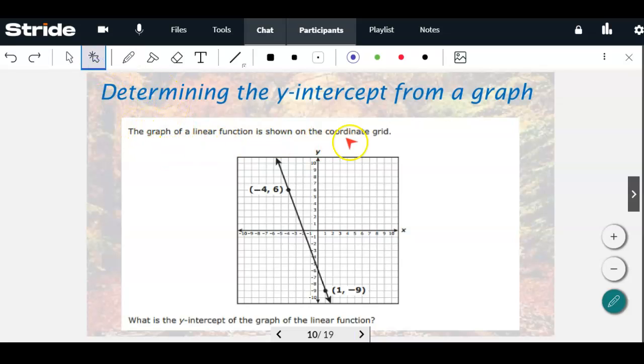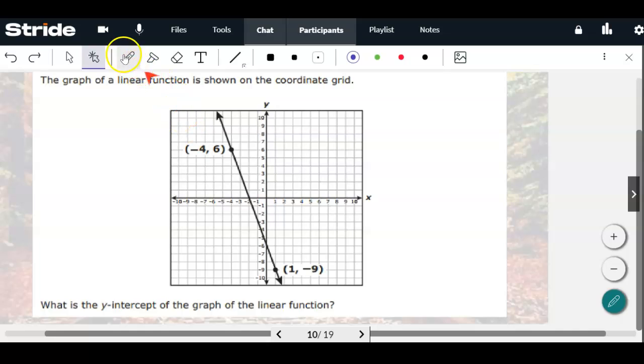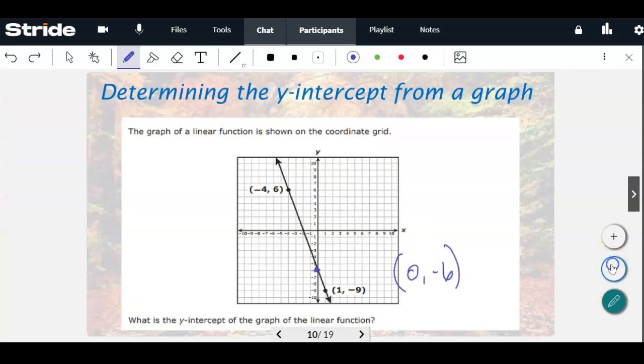It says the graph of a linear function is shown on the coordinate grid. What is the y-intercept of the graph of the linear function? So this is something you would also have to be able to do. You just look at where it crosses. This one crosses right here at negative 6. That one's kind of hard to tell. I know on the star test one time they put this weird fraction number. And you can actually figure that out with the slope formula. But for this recording, we'll just say that it is 0, negative 6.